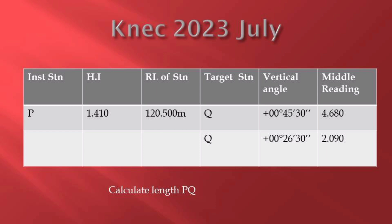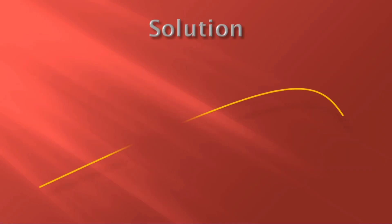We have been provided a table. Instrument P, we have been given the heights and the radius levels of the stations, and then we have targets on the same place with different vertical angles. We have been given only the mid readings of those targets. So the instrument is at P and our targets were at Q, that is the same position if we were using a staff. The staff did not move anywhere.